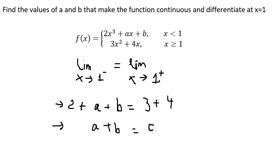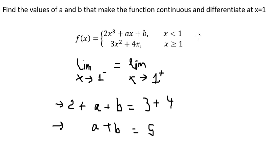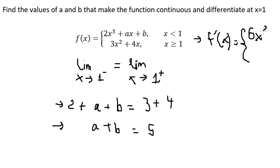Now for differentiability at x equals one. Taking the first derivative of the left piece gives 6x² plus a, and the derivative of the constant b is zero. Taking the first derivative of the right piece gives 6x plus 4.